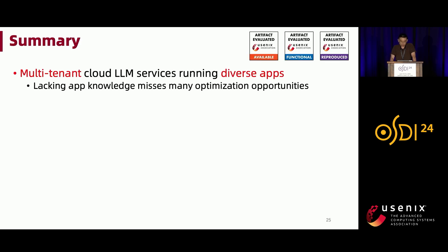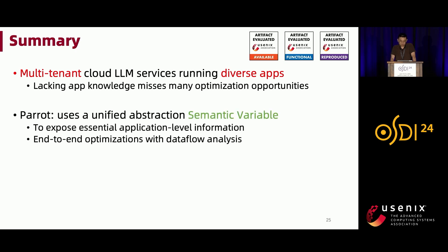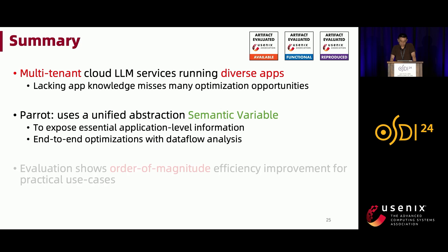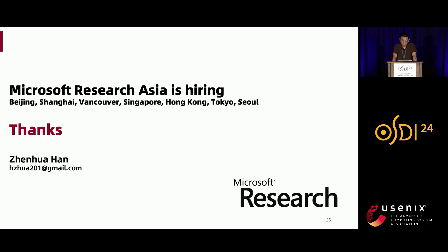In summary, existing public LLM services face diverse applications, but lacking application knowledge causes them to miss many optimization opportunities. In Parrot, we propose semantic variables as a natural and unified way to expose essential application information, enabling many end-to-end optimizations using data flow analysis. Our evaluation shows order-of-magnitude efficiency improvements for many practical use cases. Thank you — we are also actively hiring at Microsoft, and I'm happy to take any questions.